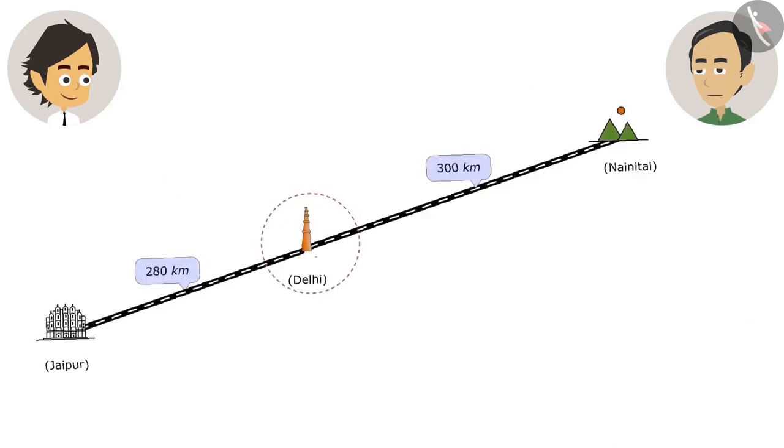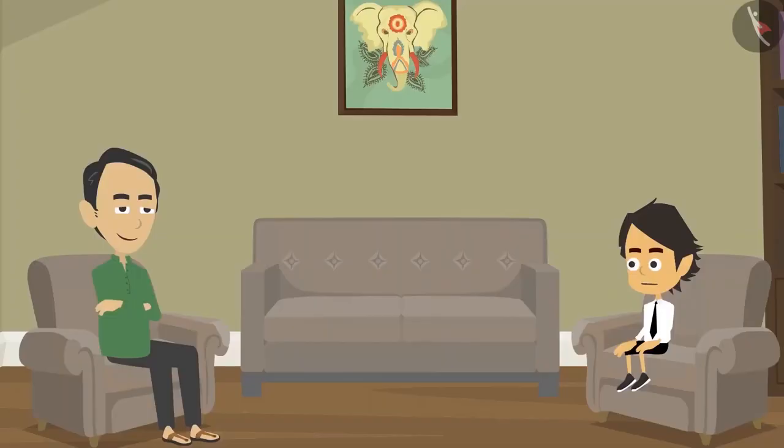Look, we are here and if we go 300 kilometers towards right, we will come to Nainital. And if you go 280 kilometers left from here, we will come to Jaipur. Now tell me, how far is Jaipur from Nainital? The distance between the two is 580 kilometers. That's why we cannot go to Jaipur this time. We will go later. Okay, Dad.